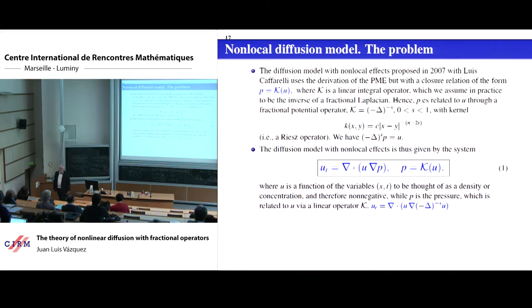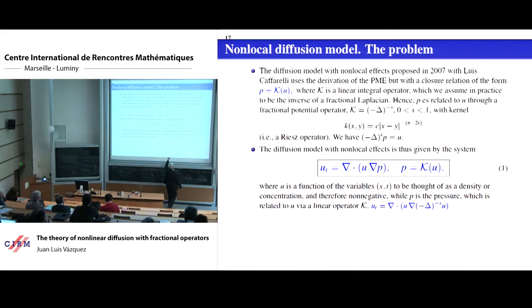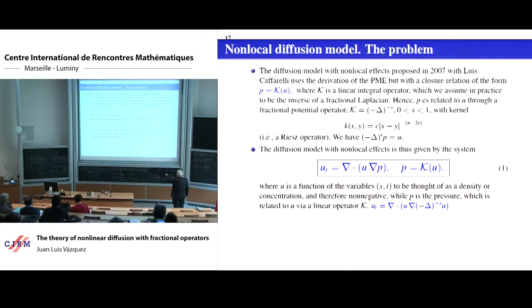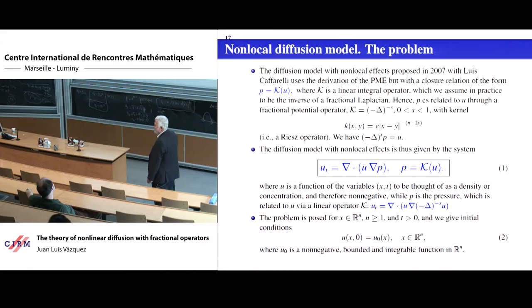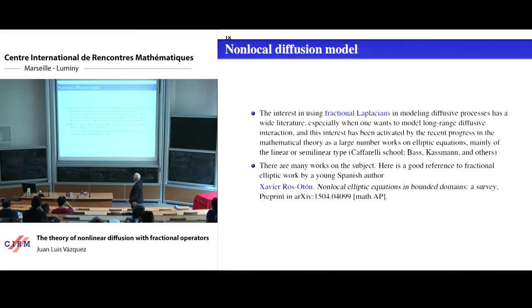The end result is: u_t = div(u · ∇P), where P = K * u (K is the Riesz kernel). This is related to Burgers' equation — in one dimension you get a version of Burgers' equation. The fractional Laplacians were first used in nonlinear theory in elliptic equations, like (−Δ)^s u = u^p — typical semilinear elliptic equations. There is a young researcher from Barcelona, a student of Cabré, who wrote a nice survey on nonlocal elliptic equations.